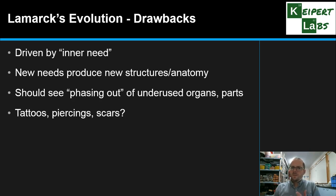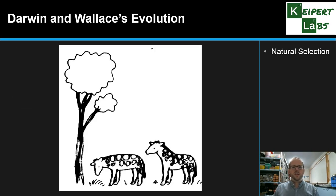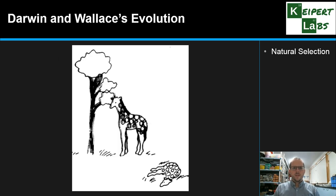So we can see that Lamarck's idea doesn't really make a lot of sense. It sounds nice in theory, but under these circumstances it doesn't play out. So let's have a look at Darwin and Wallace's idea of natural selection. We have short-necked, short giraffes, and gradually over time what we see is that there is some variation in the population — that some giraffes end up with longer necks than other giraffes.